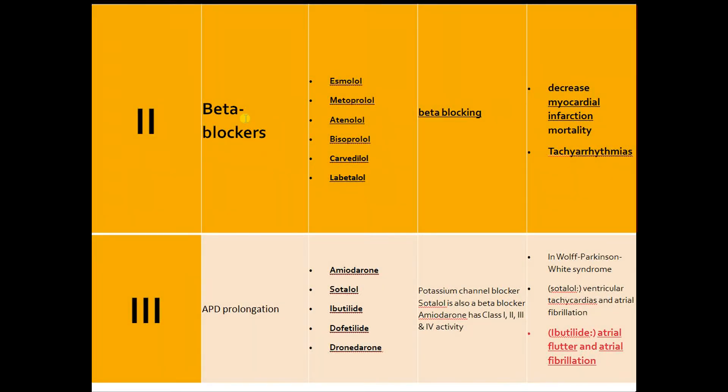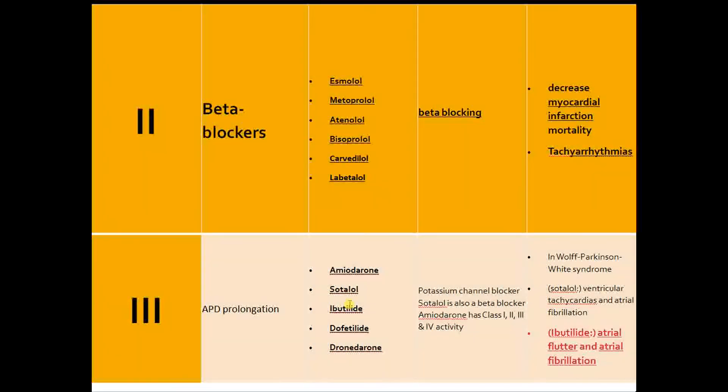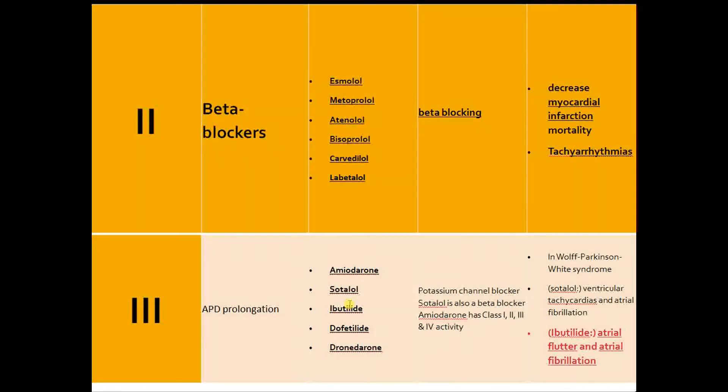Class 3 includes a special group that prolongs action potential duration, called APD prolongation. This includes amiodarone, dronedarone, sotalol (interestingly a beta blocker), and a new class of drugs including ibutilide and dofetilide. These medications act by blocking potassium channels. Sotalol, though a beta blocker, acts by this mechanism, which is why it's included here. Once again used for ventricular tachycardias and atrial fibrillation. Important to remember that ibutilide and dofetilide can be used only for atrial arrhythmias.